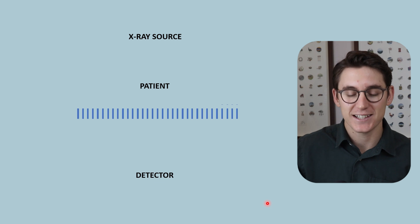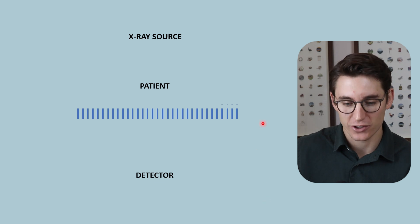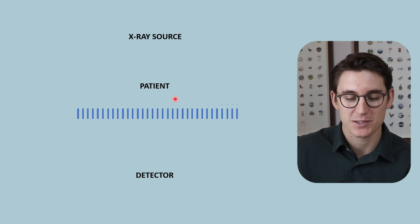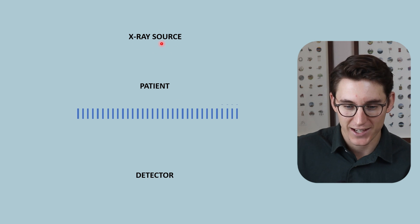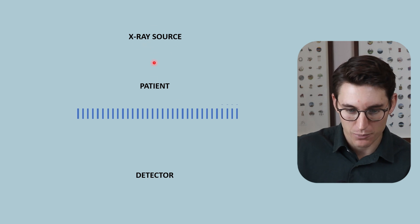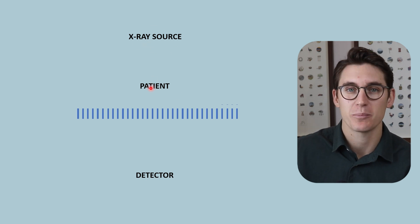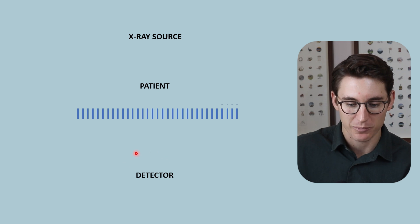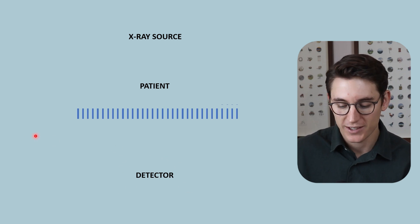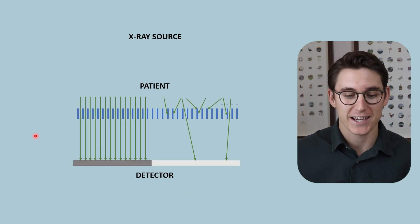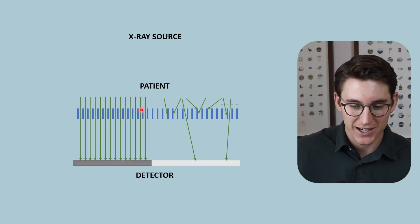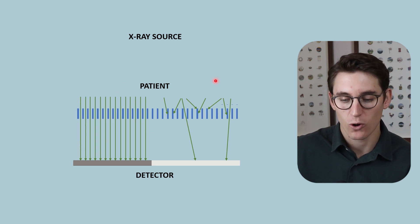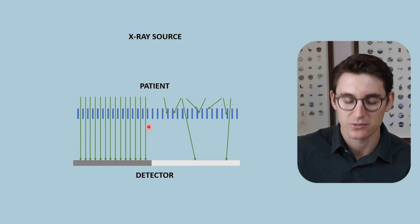So what exactly is an anti-scatter grid? It's a grid that we place between our patient and the detector. We have an x-ray source with our primary x-ray beam, and then we have an exit or remnant x-ray beam heading towards our detector. That exit x-ray beam has either primary transmitted photons or scattered photons.